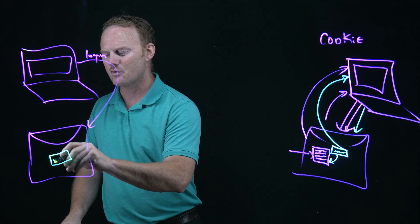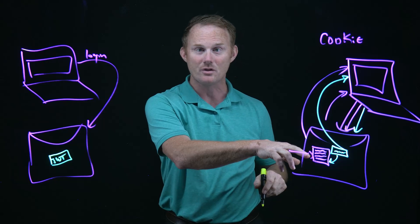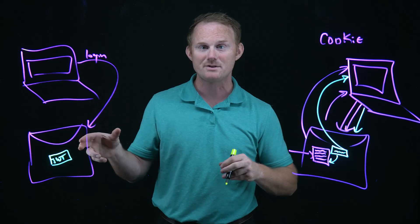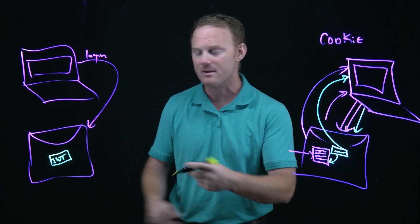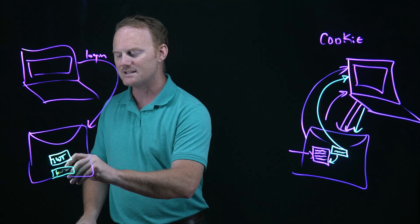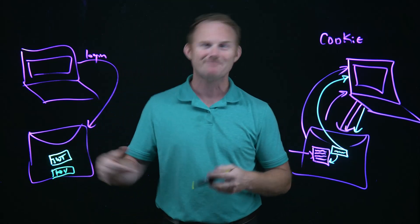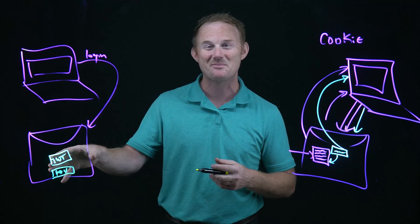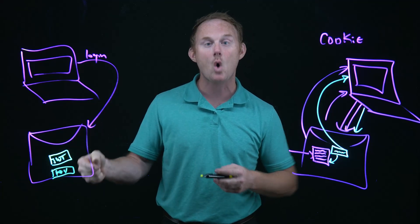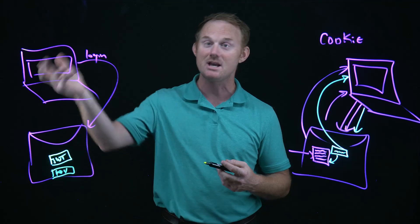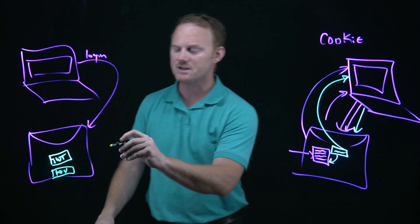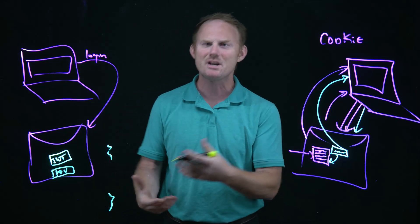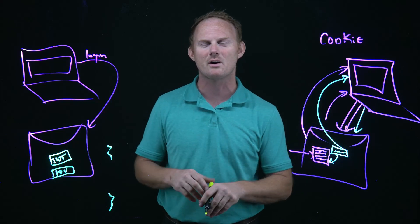Instead of creating session data on the server and sending a cookie back, we create a web token which has data inside of it. It carries that data around, and we have a key. There are different ways to do it - asymmetric and symmetric encryption - but the JSON Web Token can always be verified as valid by the key when it gets to the server. This JSON Web Token is literally JSON. It's an object and you can encrypt it if needed.